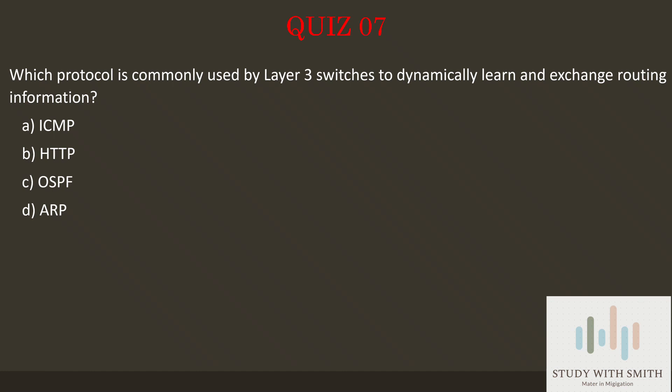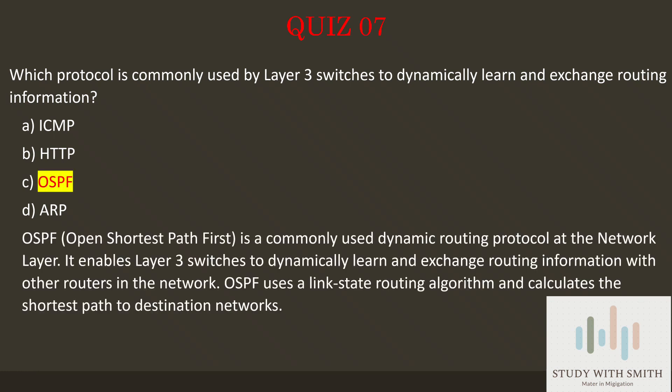The answer is C — OSPF, Open Shortest Path First. OSPF is a commonly used dynamic routing protocol at the network layer. It enables Layer 3 switches to dynamically learn and exchange routing information with other routers in the network. OSPF uses a link-state routing algorithm and calculates the shortest path to destination networks.